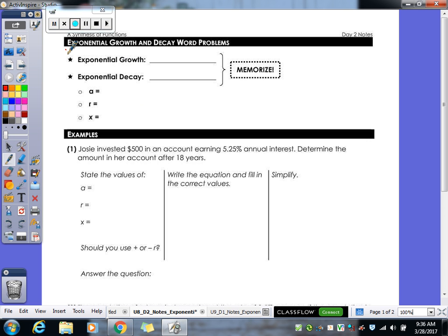Alright, so what we're working on today is our exponential growth word problems. Thinking back for a second, with our graphs, our exponential growths were our increasing ones. So then your exponential decays are your graphs where they decrease. Those are our growth and our decays based off the graph.